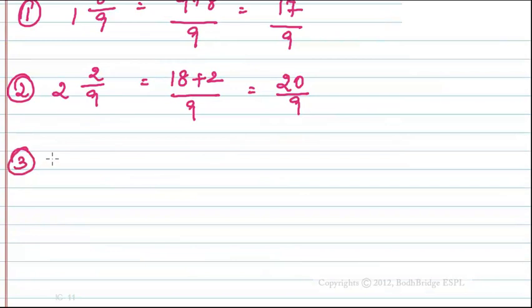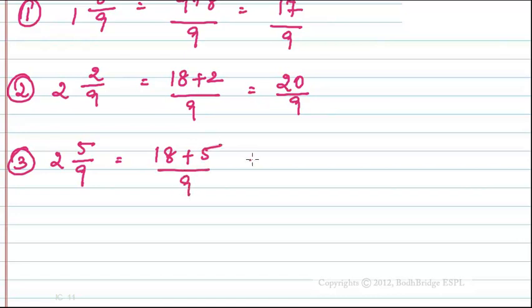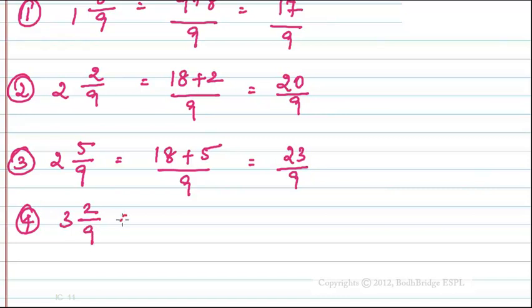The third term is 2 and 5/9, so it is (18 + 5)/9, which equals 23/9. The fourth term is 3 and 2/9, so it is (27 + 2)/9, which equals 29/9.